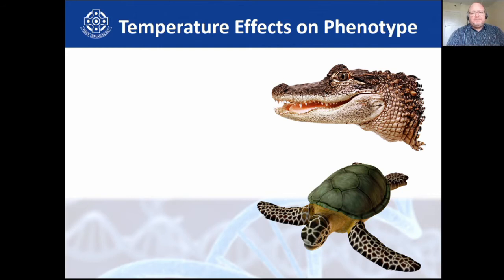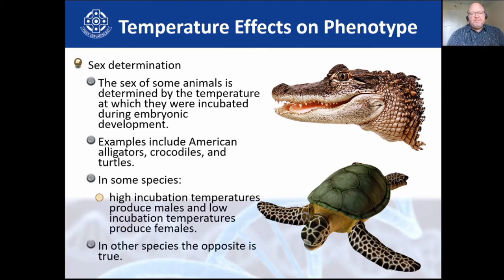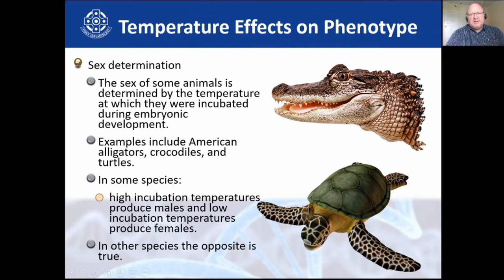Interestingly, some crocodiles and turtles have their gender determined by the temperature at which the egg is incubated — not by genetics. High incubation temperatures produce males and low incubation temperatures produce females in some species, while the opposite is true in others. Examples include American alligators, crocodiles, and turtles. This raises the question: with further climate change, could we end up with a single-gender crocodile species?